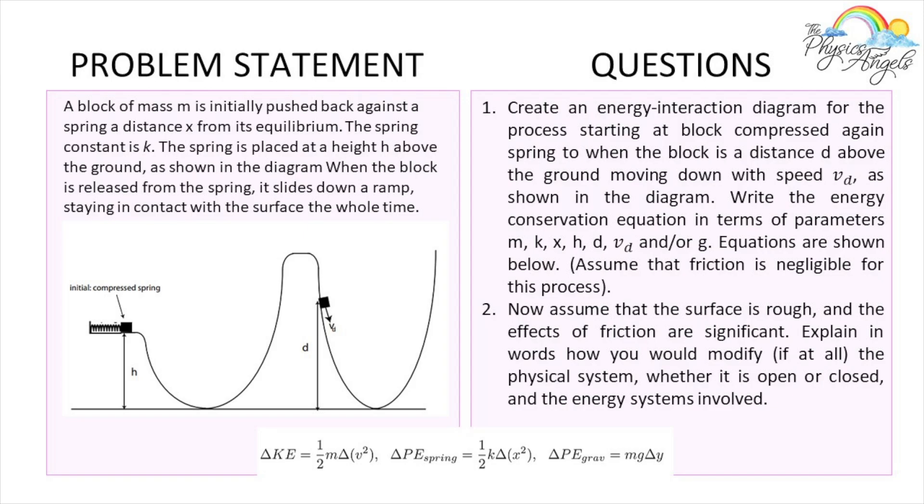The first thing we have to do is create an energy interaction diagram for the process starting at a block compressed against the spring to when the block is a distance d above the ground. We have to write the energy conservation equation in terms of all the parameters m, k, x, h, d, v_d, and g. The equations are shown below, even though I don't have them on the slide, but feel free to look at the printable PDF version and let's just get started.